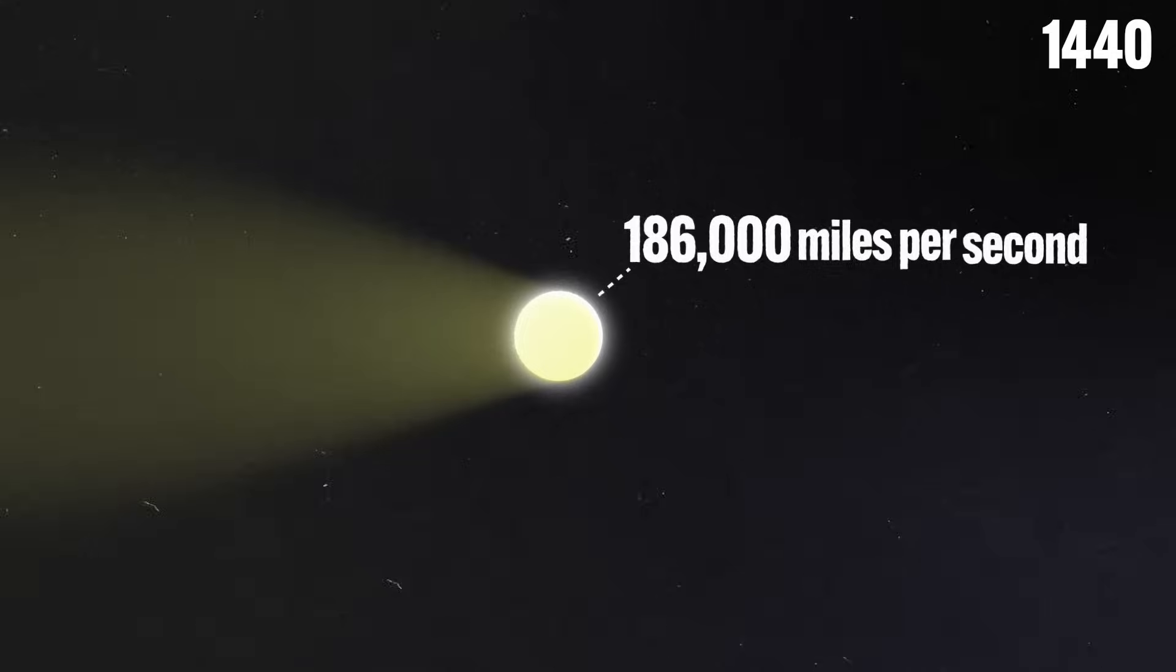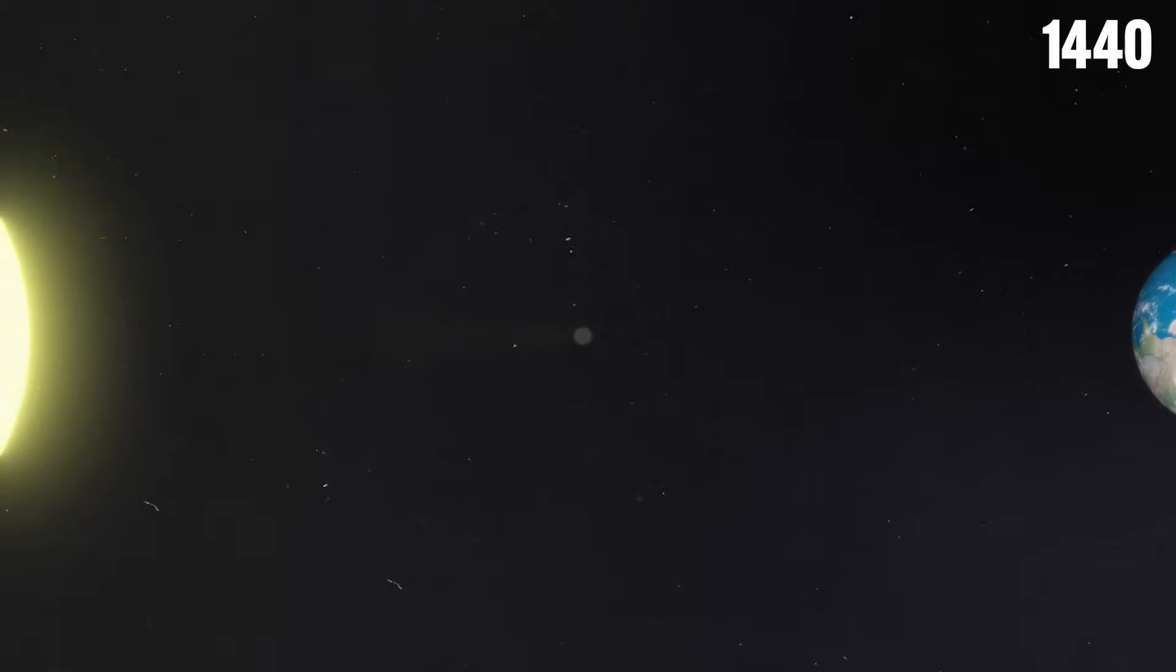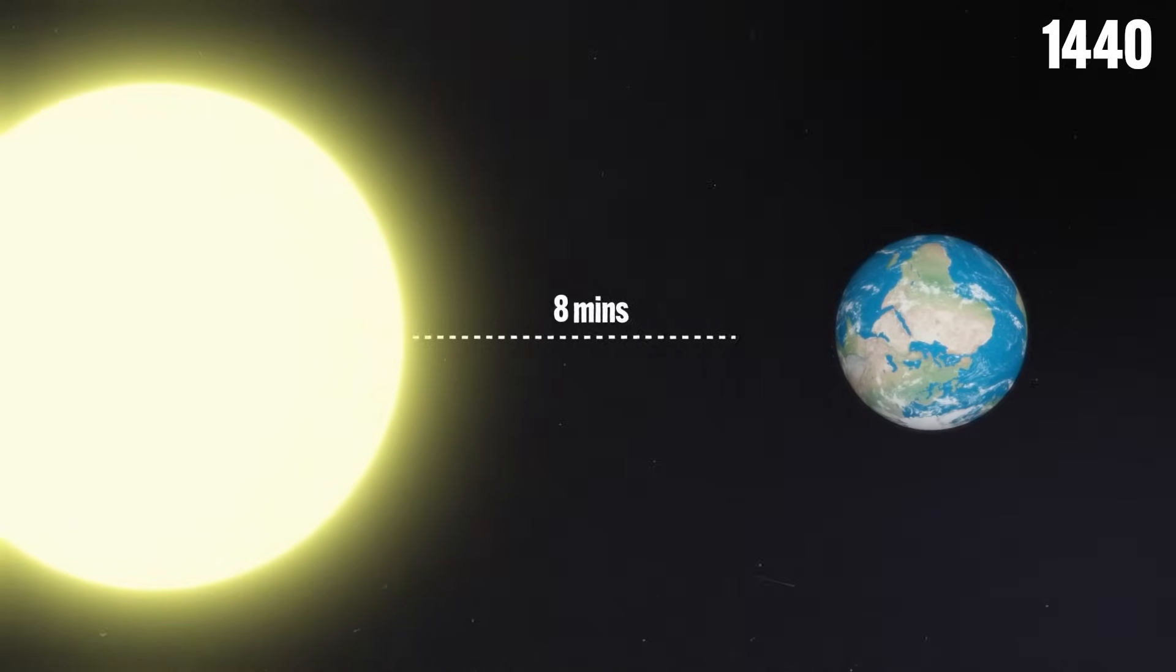Even though light travels at an astonishing 186,000 miles per second, the immense distances it spans mean it reaches us long after it was emitted. For example, the light from our sun takes eight minutes to travel to Earth.